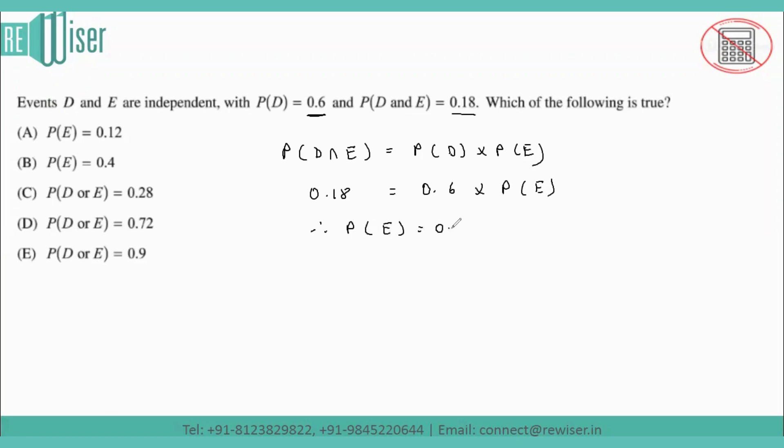So the probability of E we got is 0.3. Now we'll check out the options. The probability of E they have given is 0.12 and 0.4, so these two are not the valid options for this particular question.